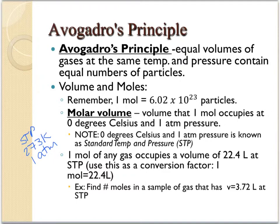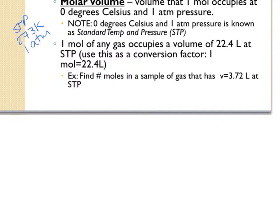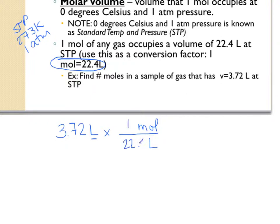Our example says to find the moles in a sample of gas that has a volume equal to 3.72 liters at standard temperature and pressure. I'm going to start out with what I've been given: 3.72 liters at STP, which means 273 Kelvin and one atmosphere. To convert to moles, I know that one mole equals every 22.4 liters. Placing liters in the denominator and moles in the numerator, I multiply my two fractions and get 0.166 moles of this gas.